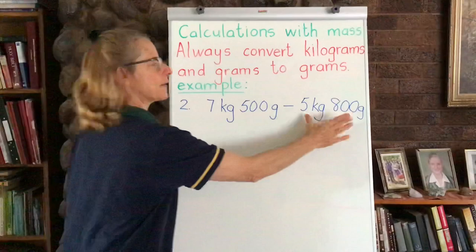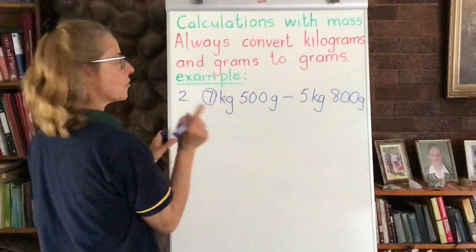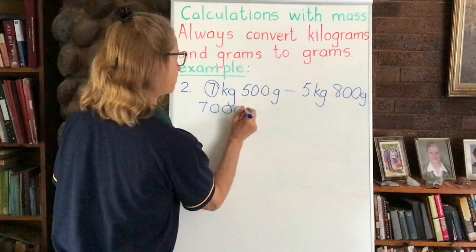All right, so let's go here to 7 kilograms. Now we have to convert this part to grams. Remember how we've done it before? We learned it before - if we have to times 7 by 1000, that's right, so then it will be 7000 grams.